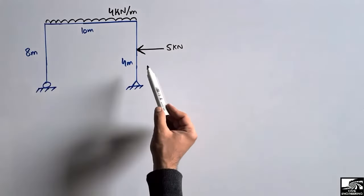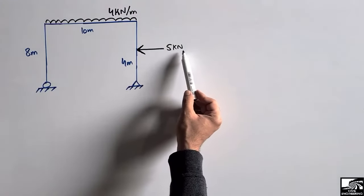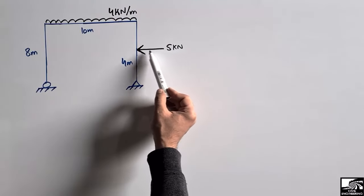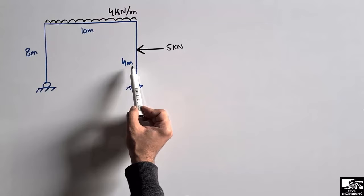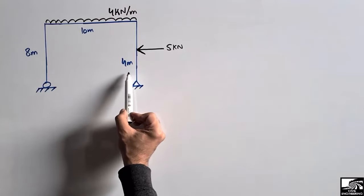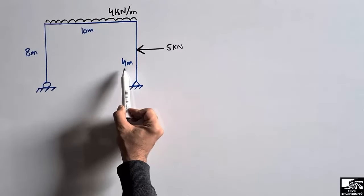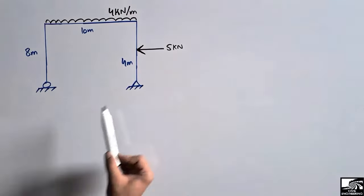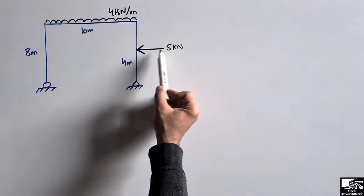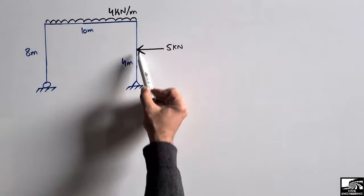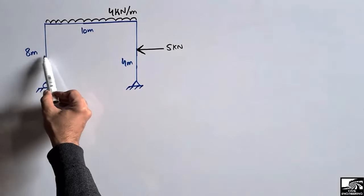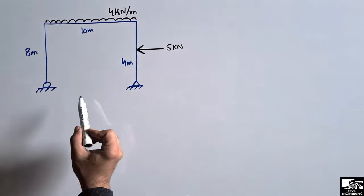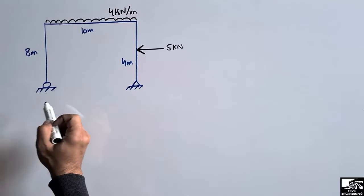This column has a concentrated load of 5 kN acting at its center, which is at a distance of 4 meters from the end. The other column has no load. First we have to find the support reactions, and then we can draw the shear force and bending moment diagram for this frame.